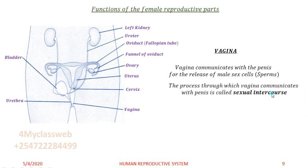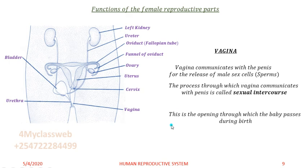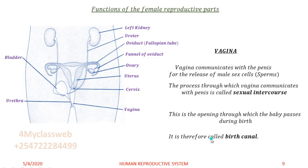The process through which the vagina communicates with the penis is called sexual intercourse. Sexual intercourse normally takes place through the vagina. The vagina can also be an opening through which the baby passes during birth — once the fetus has developed in the uterus, the baby passes out through the vagina, which is why it is called the birth canal.